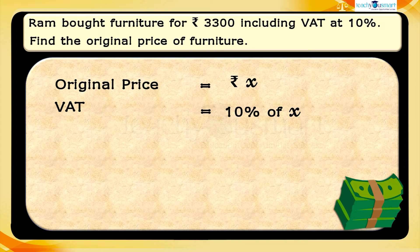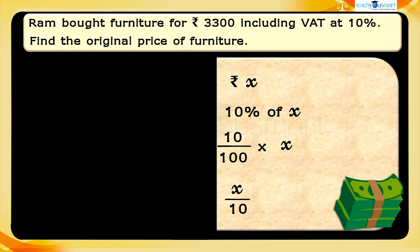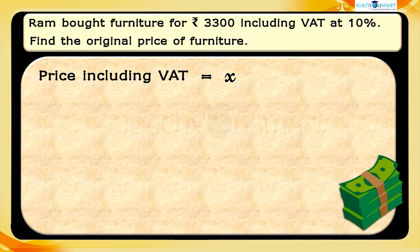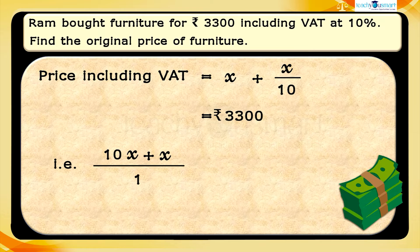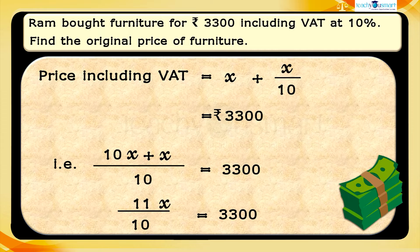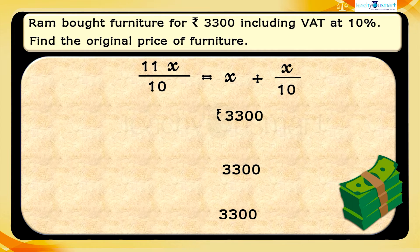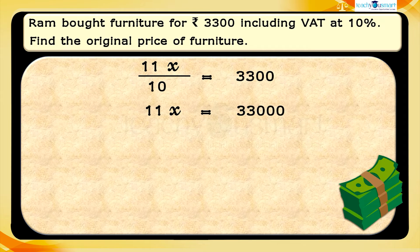Let's assume the original price equals X rupees. VAT = 10% of X = (10 ÷ 100) × X = X ÷ 10. Price including VAT = X + X ÷ 10 = 3300 rupees. That is (10X + X) ÷ 10 = 3300. Therefore 11X = 33000, so X = 33000 ÷ 11 = 3000 rupees.